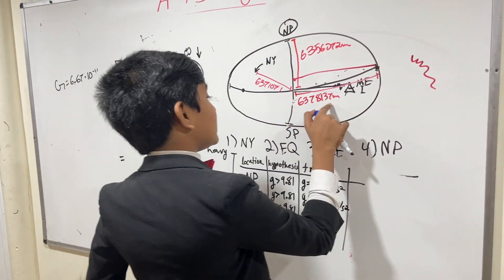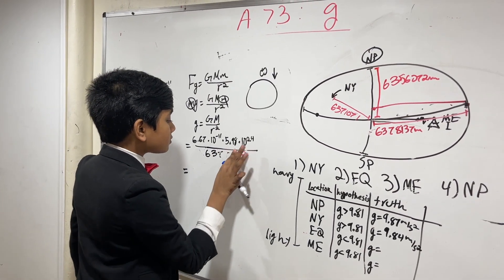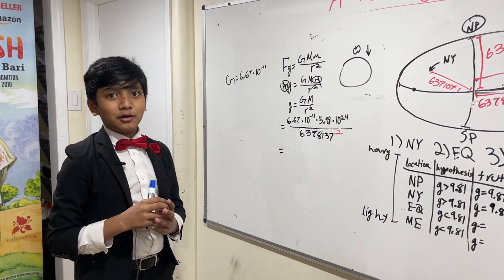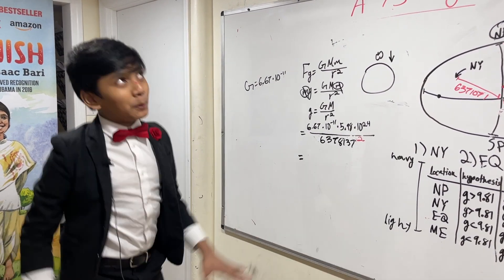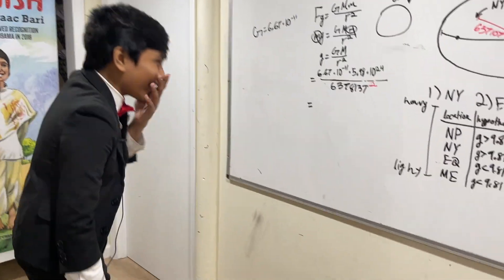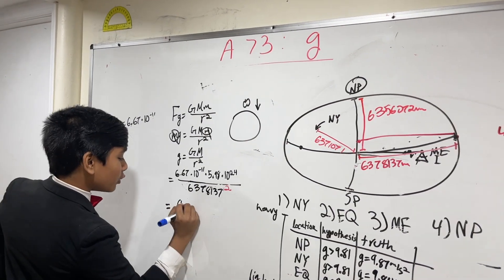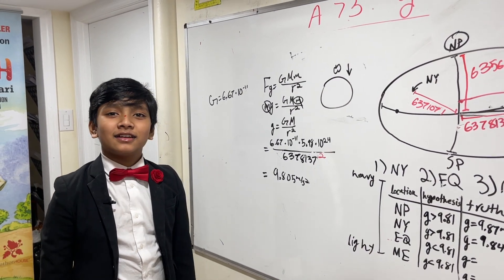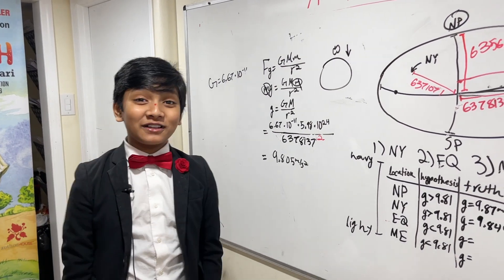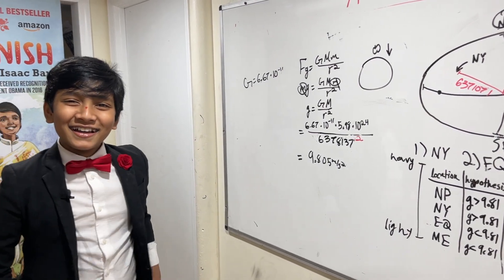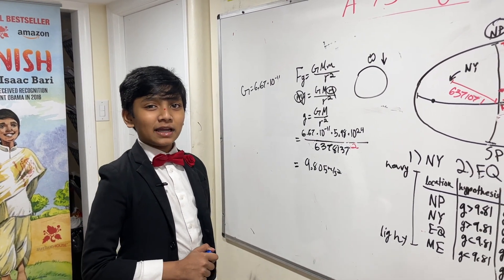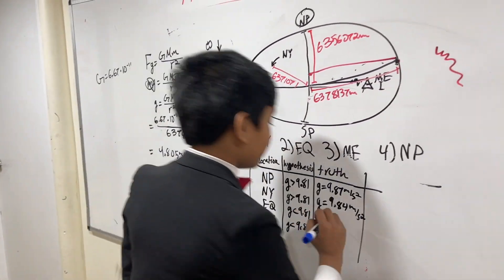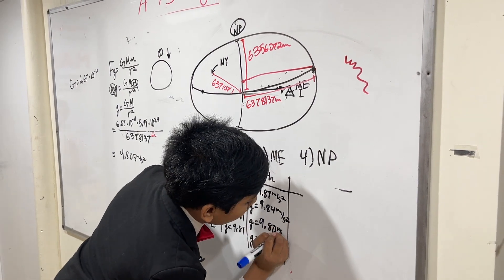What about the equator? The radius is 6,378,137. Let me spit out another magical answer that I definitely can do in my head. It's about 9.805 meters per second squared. I obviously use a calculator because I'm not that dumb. We're just going to denote that as 9.80 meters per second squared.